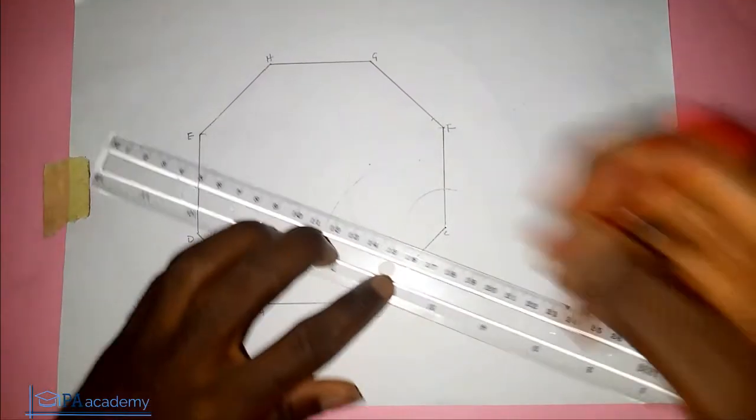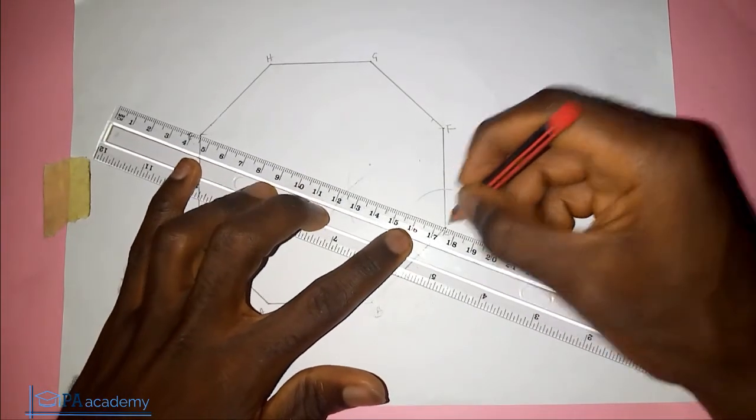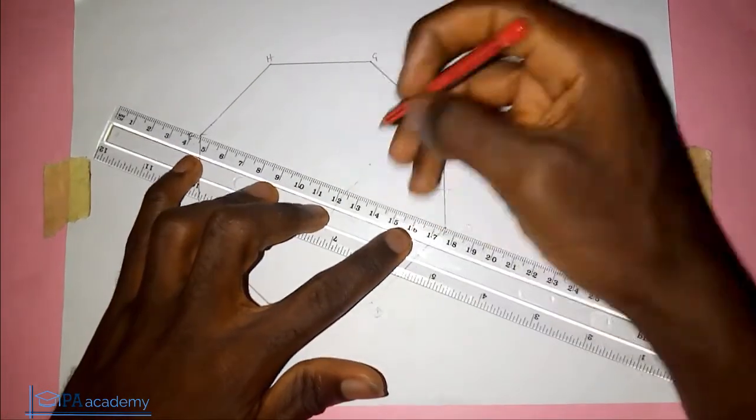Here these two arcs meet. You draw a line from point C straight to where the arcs meet.